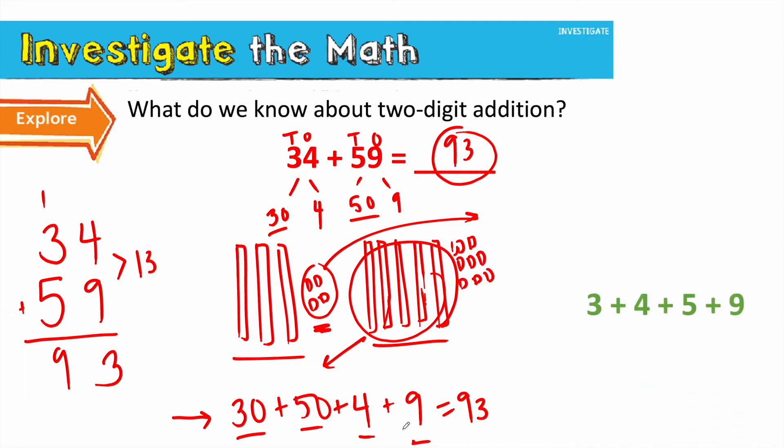Read this number sentence with me. 3 plus 4 plus 5 plus 9. But we really want to pause here and help kids think about before we even solve this. Do we think this is equivalent? Why or why not? So we do here want to build in some turn and talks. Look at this number sentence, just like 34, a 3 and a 4, and a 5 and a 9, just like 59. Before you solve, is this number sentence equivalent? Why or why not? Turn and talk to your partner.